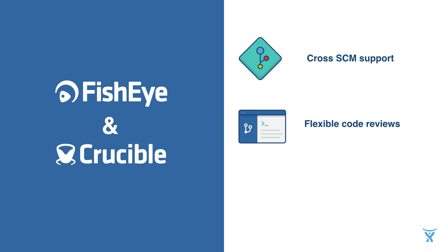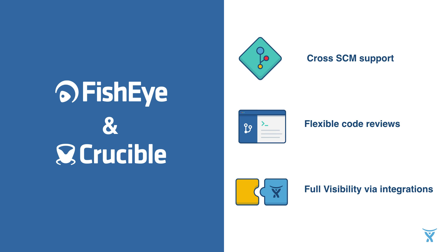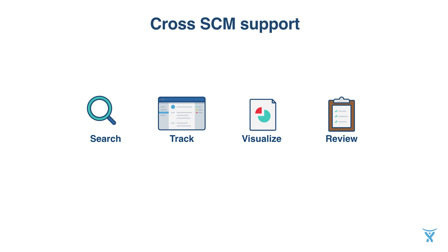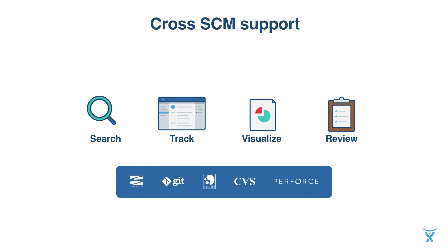What is the value behind Fisheye and Crucible? First of all, it supports key version control systems. It also gives you flexibility while performing code reviews, and it's integrated with other Atlassian tools like Jira, Bitbucket Server, and Bamboo. Let's take a closer look at the key features. You can search, track, and visualize code changes. The software supports Git, SVN, Mercurial, Perforce, and CVS.